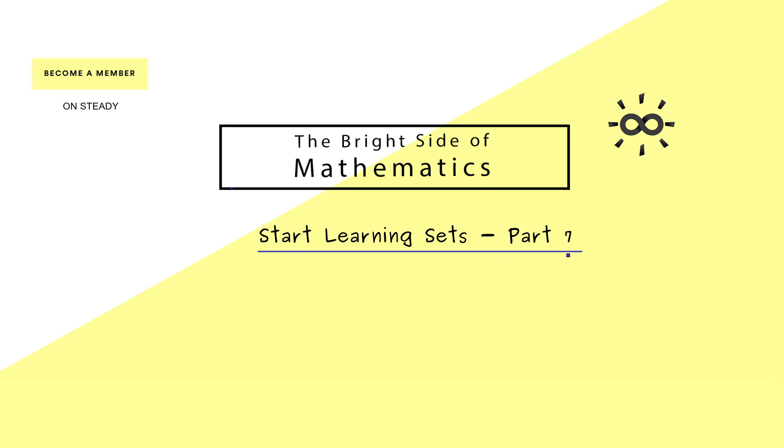Today in part 7 we will finish our discussion about maps by talking about the composition. Now the idea here is that we simply have two maps: one goes from a set A into a set B and the other one goes from the set B into the set C.